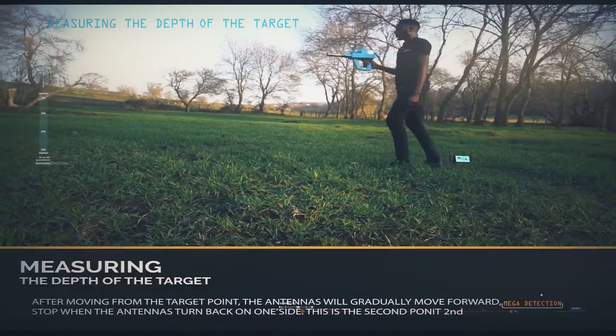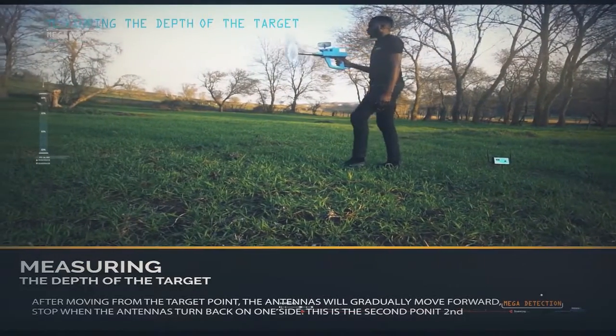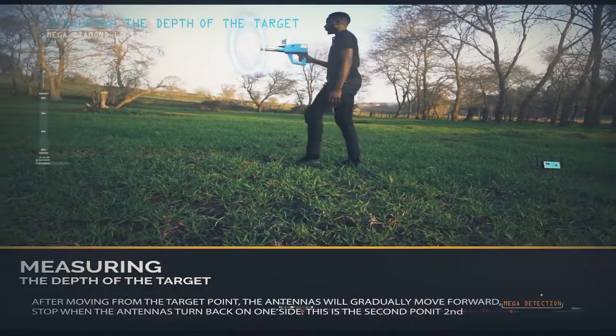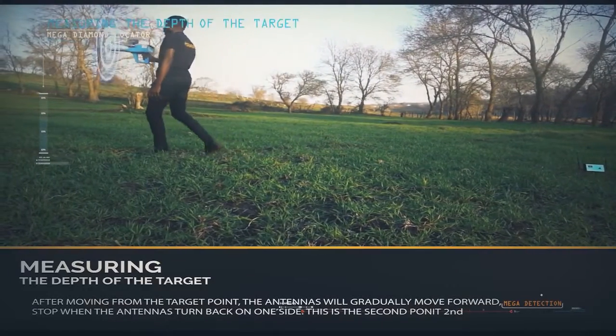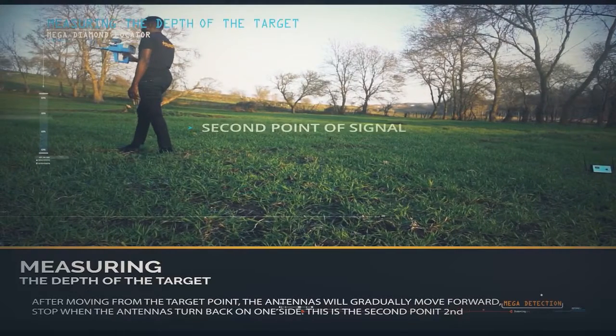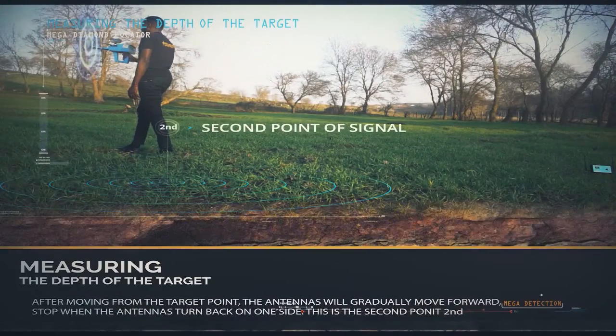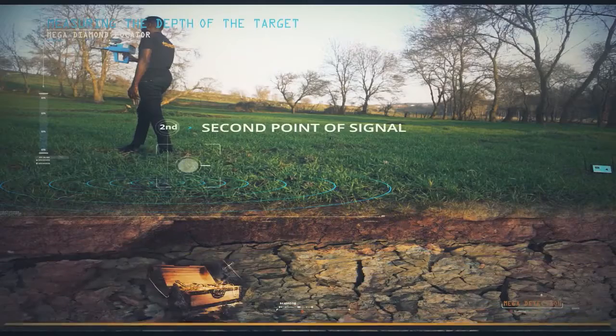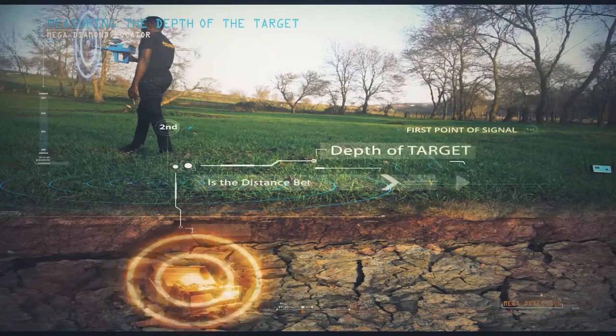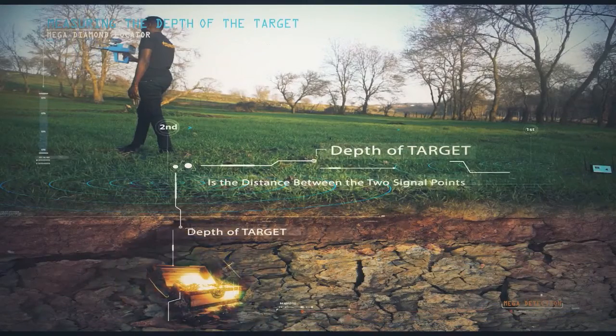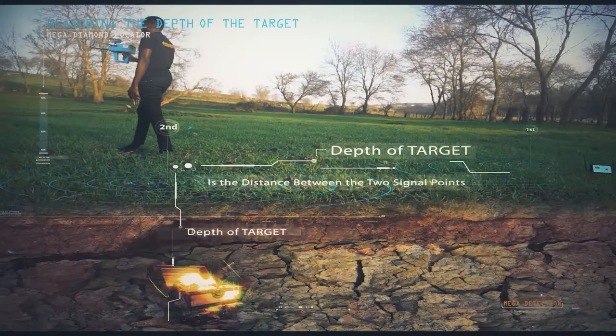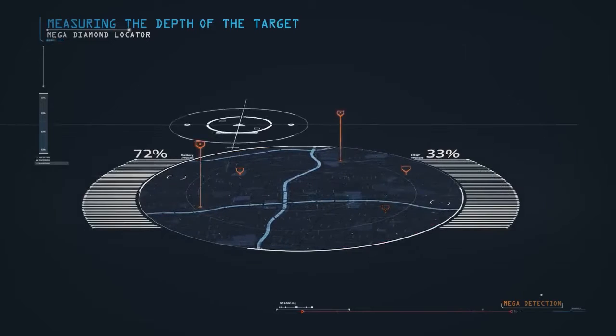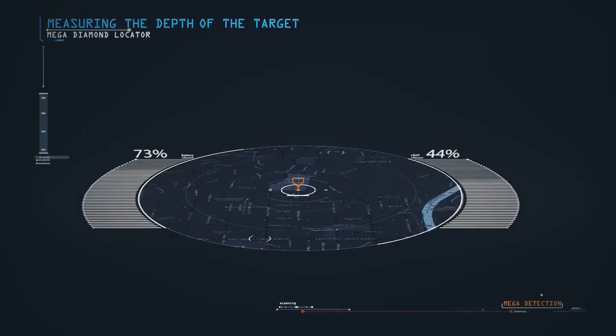After moving from the target point, you will notice that the antennas will gradually move forward. Stop when the antennas turn back on one side, and this is the second point of signal. The approximate depth of the target is the distance between the two signal points, with the slope of 45 degrees from the second point. Several depth measurements are required from various other signal points to measure depth more accurately.